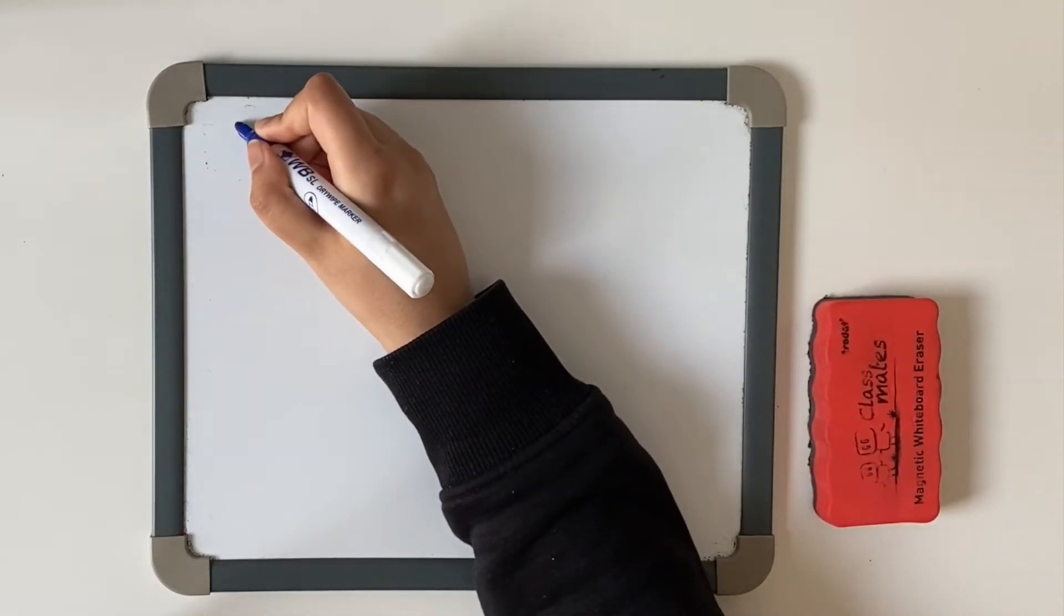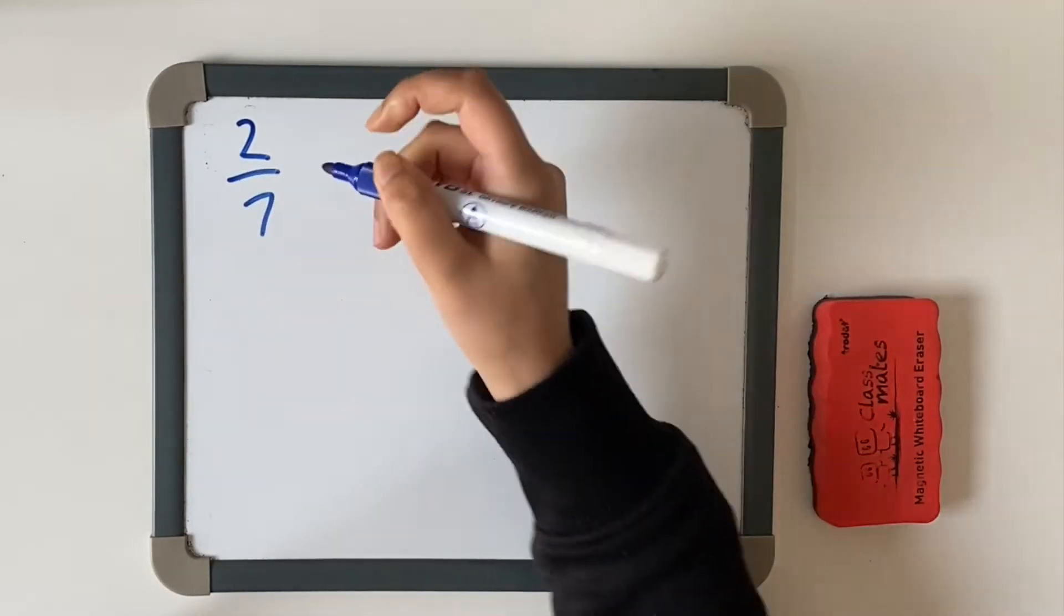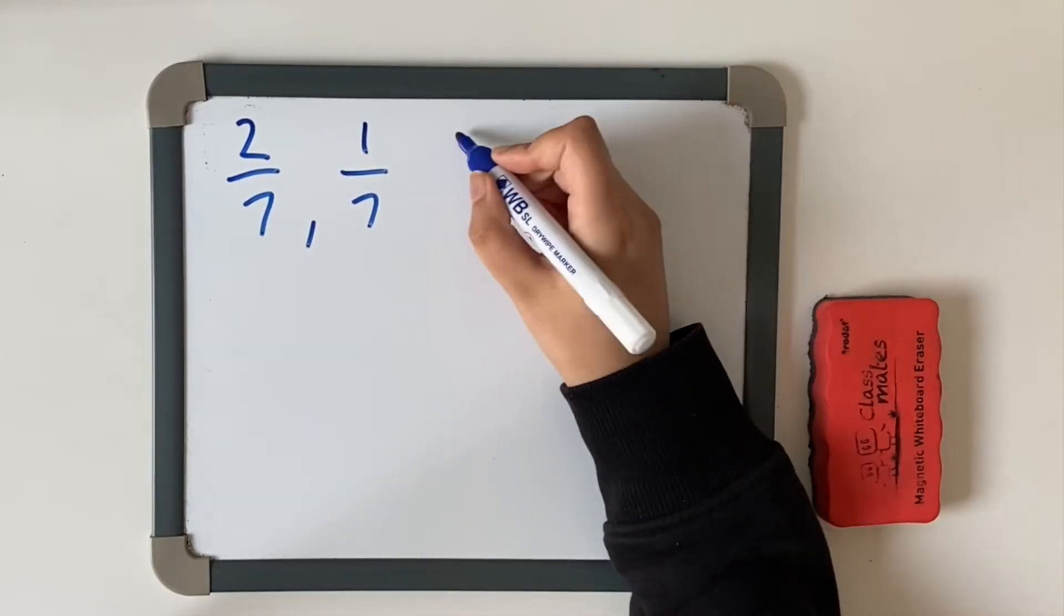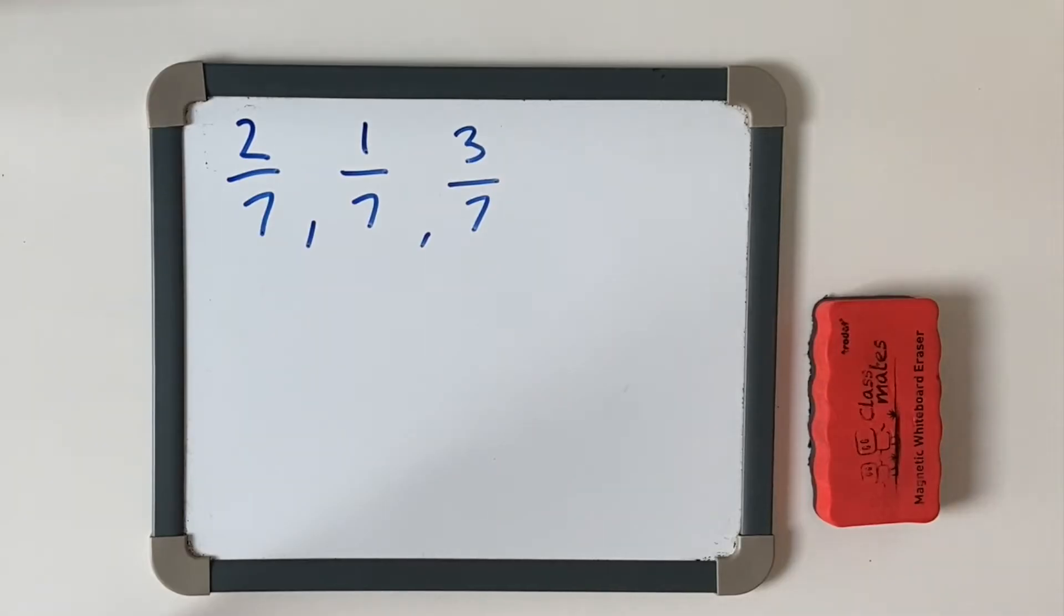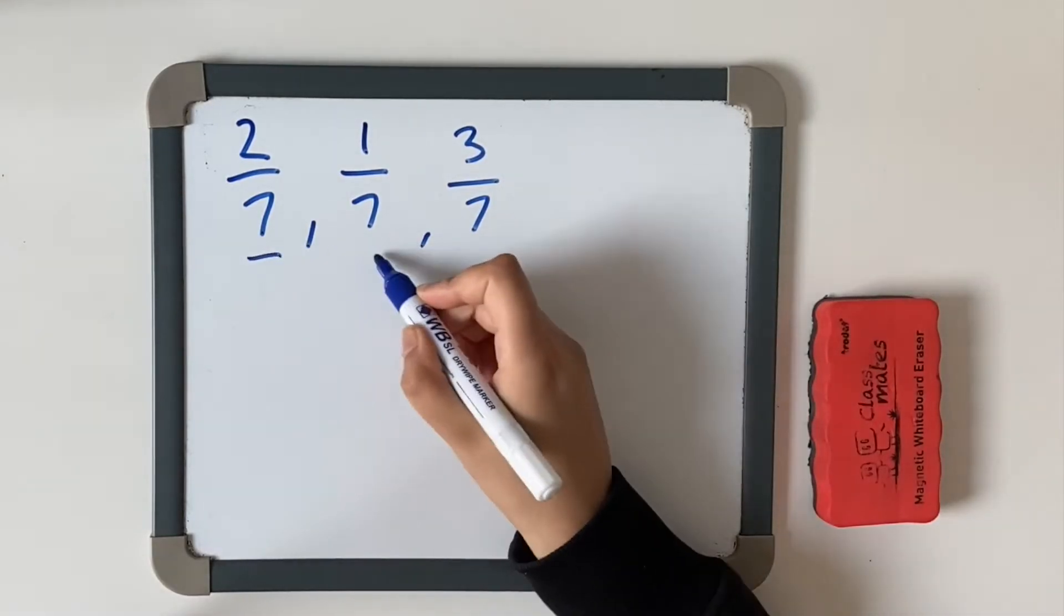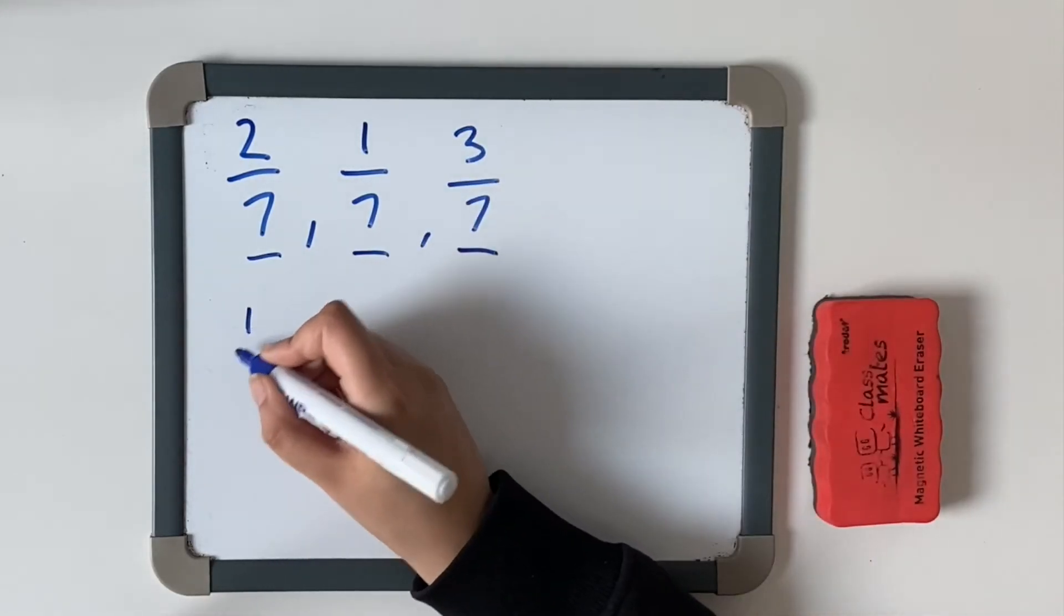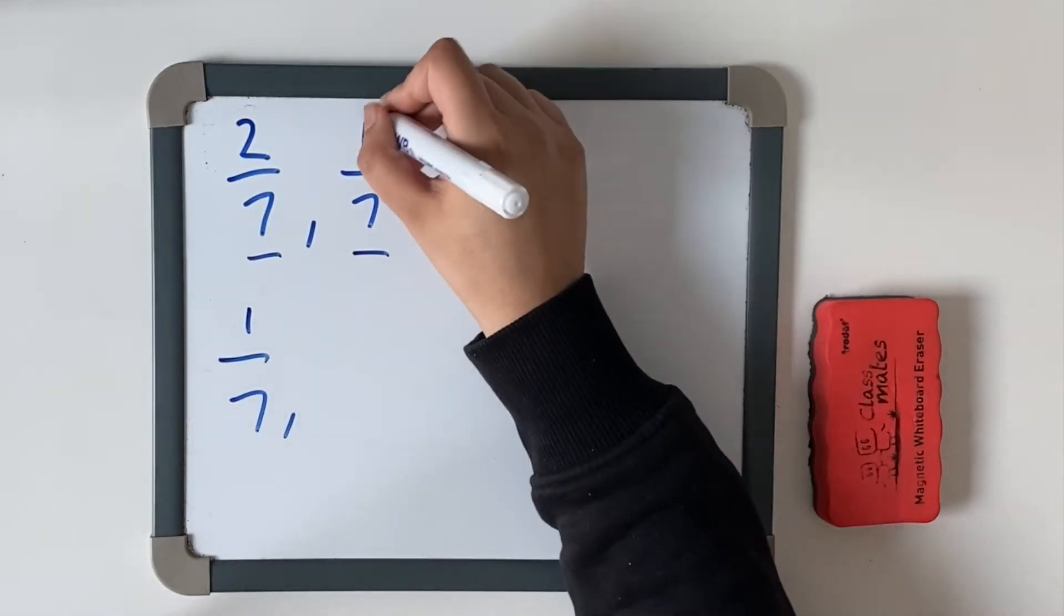I'm going to give you an example first. We're going to do two-sevenths, one-seventh, and three-sevenths. Based on this, we know that all the denominators are the same, and now we're going to focus on the least fraction and going up in order to the greatest fraction. We'll look at our numerators. Let's start off with one-seventh, because that's the least. It comes first.